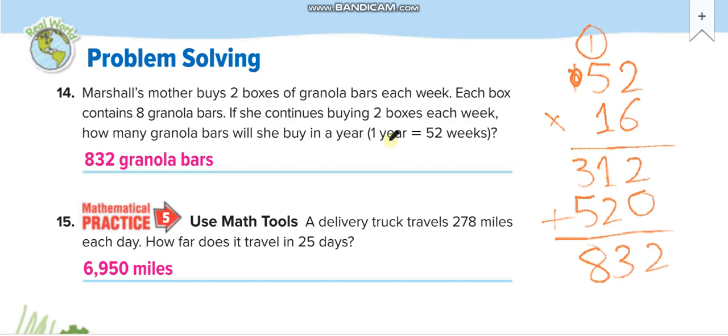So in one year, she will buy 832 granola bars. A delivery truck travels 278 miles each day. How far does it travel in 25 days? 278 multiply by 25. You can follow this process to multiply. 6,950 miles.